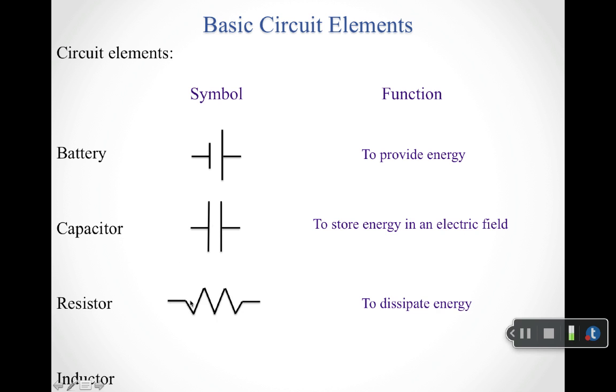Third element is going to be a resistor. And so it gets this sort of up and down looking line. And a resistor, fundamentally what it does is it dissipates energy. Part of what resistors do is basically they're going to convert electrical energy into heat and light.